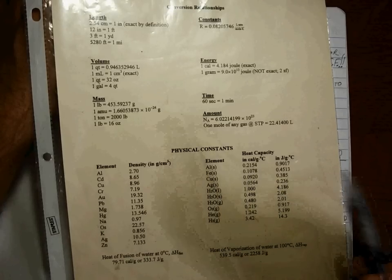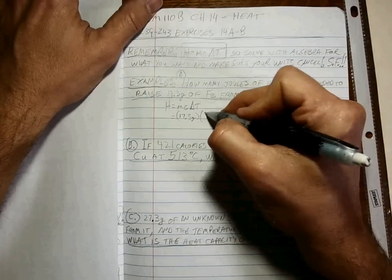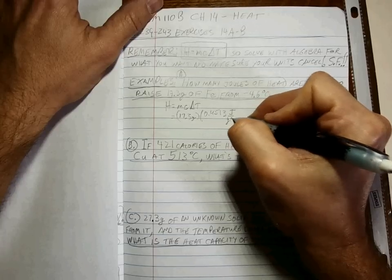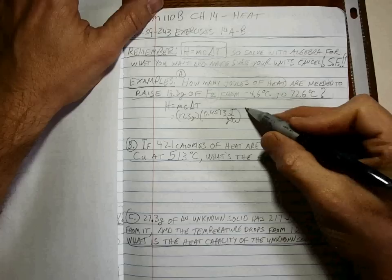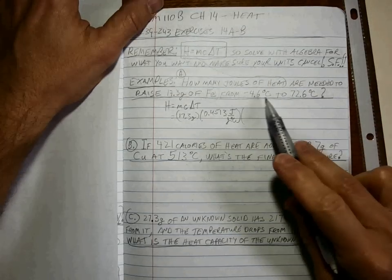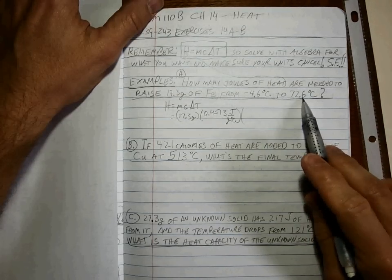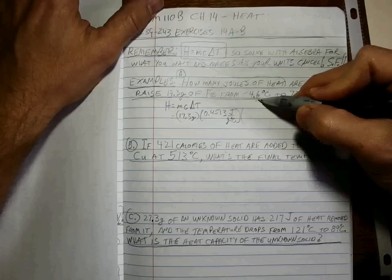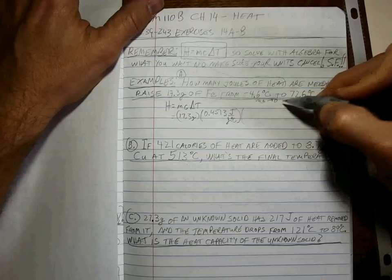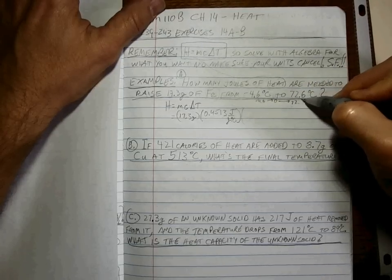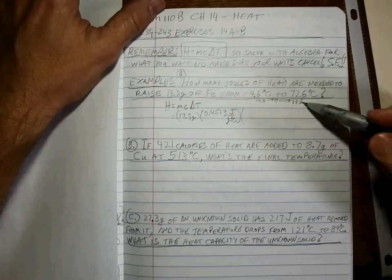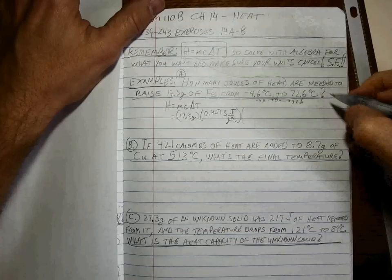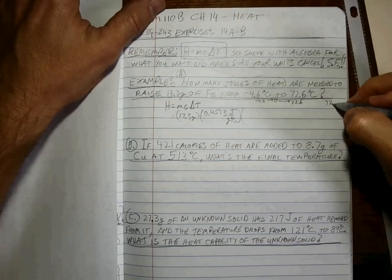Since we're talking about joules and we need iron, that's the value we're going to use: 0.4513 joules per gram per degree C. And what is the change in temperature? Some people do this by taking 72.6 minus 4.6, but I want you to think about this from a number line. Wouldn't you go from -4.6 up to 0 and then 0 to 72.6?